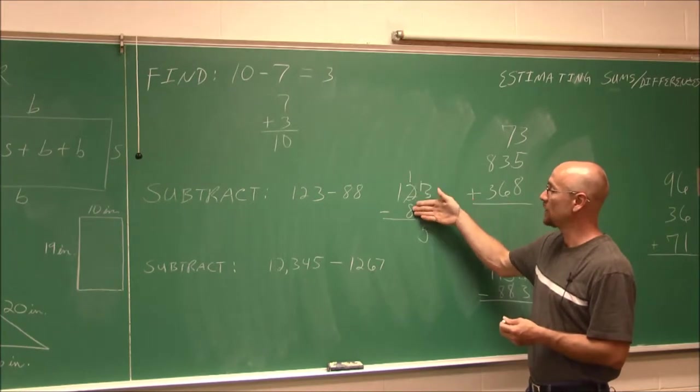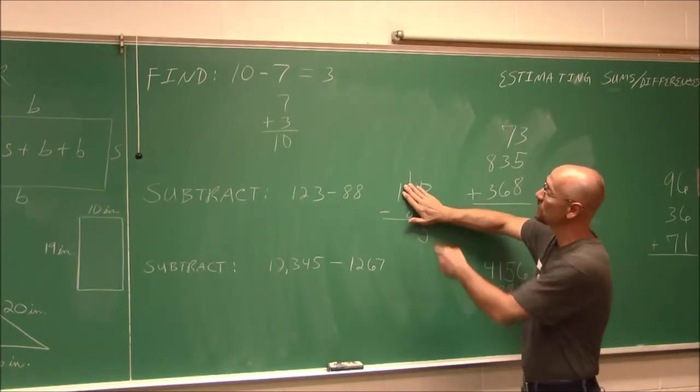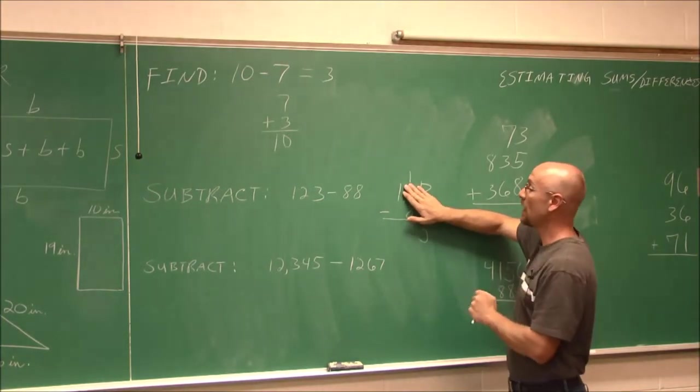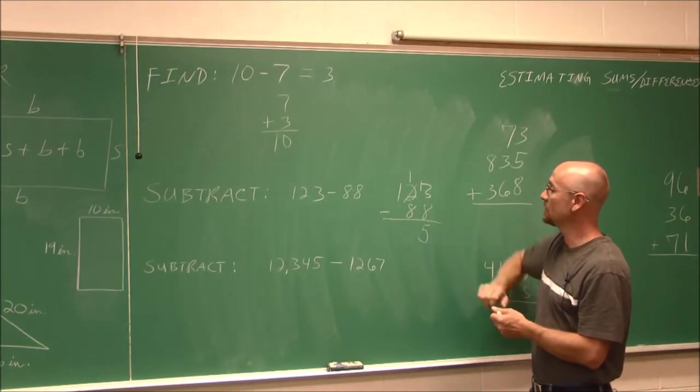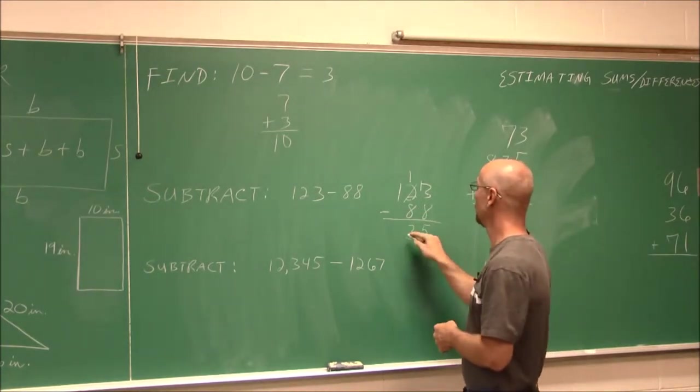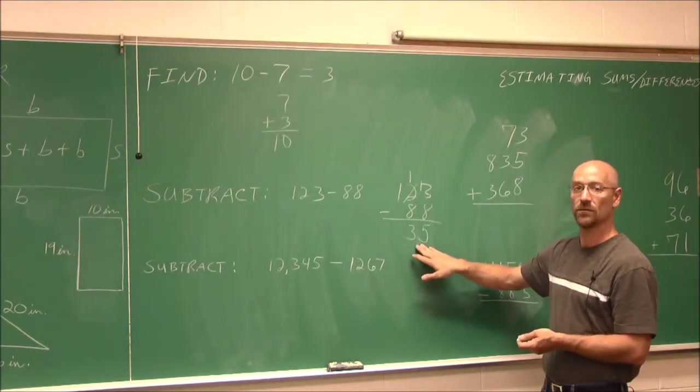Now, if I look here, 1 minus 8, well, this number is still less. So I'm going to borrow from the hundreds, so I essentially have 11. And I could cross this out and carry it up here, but it means the same thing. 11 minus 8 is going to give me 3. So we see that 123 minus 88 is 35.